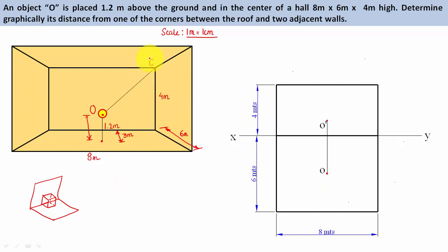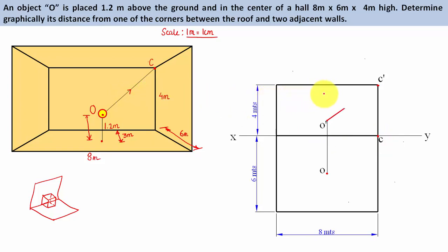Now let's work out the corner. When looking at the hall from the front, the corner C appears at the right and at the top — that's C-dash, the front view of the corner. When looking from the top, corner C appears at the back. That's the top view of C. The cable appears in a certain orientation in both the front view and the top view.